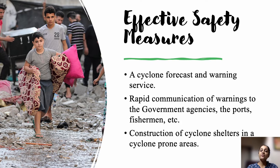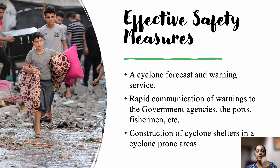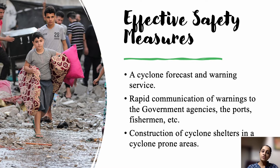The first safety measure is that there should always be a cyclone forecast and warning service. The meteorological department continuously studies satellite images to track cyclones arising from the ocean, including monitoring their movement and where they are heading next. This forecast is about 90 to 99 percent accurate, though some deviations do occur. A cyclone forecast helps enable the timely evacuation of people.